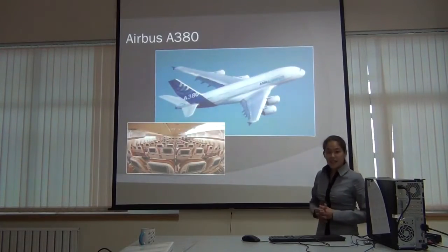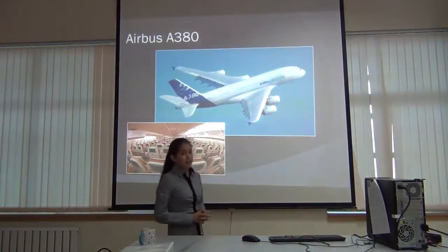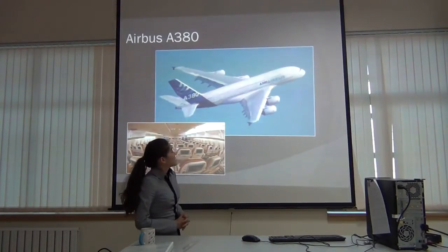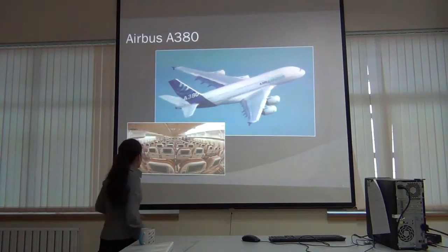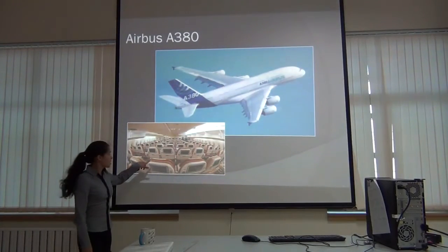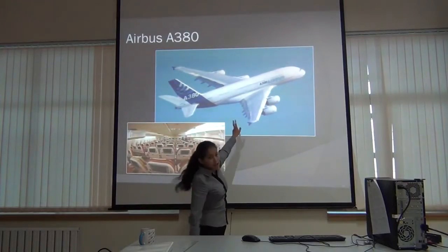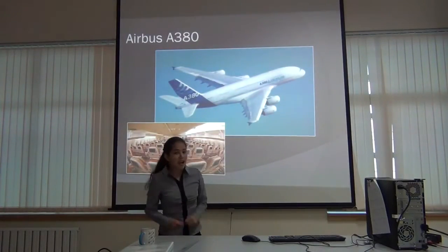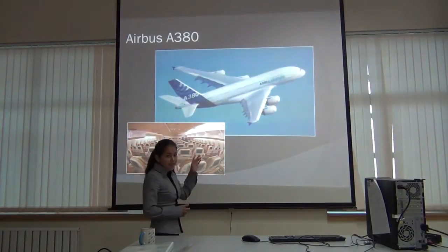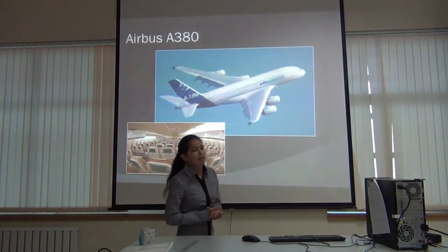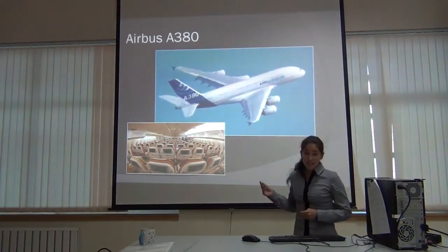Let's start with the Airbus A380. This is the largest passenger aircraft ever built. It can carry more than 500 people at a time. You can see the seating configuration here — it fits 10 people in a row and it is a double deck. It weighs around 600 tons, and you would wonder how this heavy machine can go up in the air. The answer is aerospace engineering.